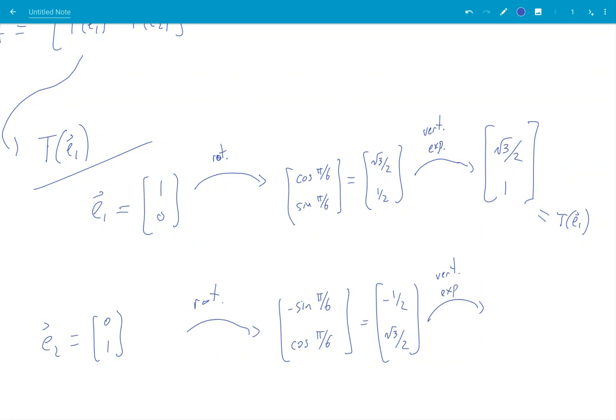Minus a half, root 3 over 2. And then do the vertical expansion and you get no change to the first component and you double in the second. T of E₂.